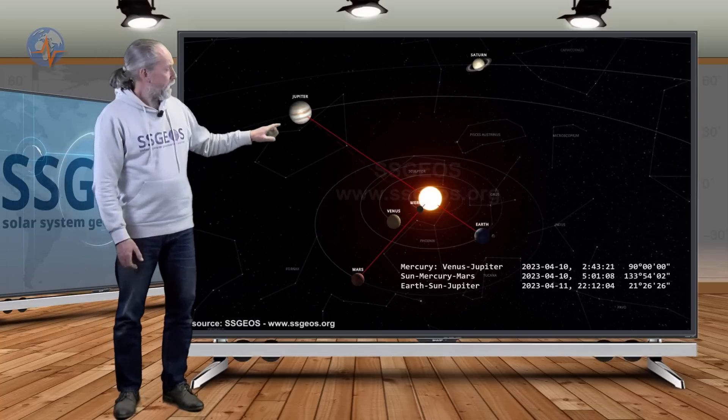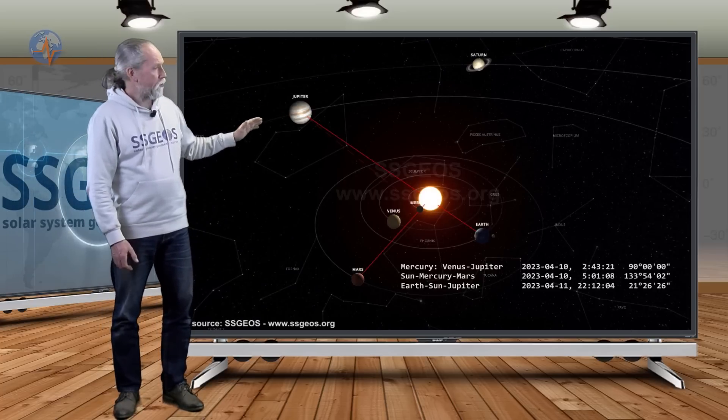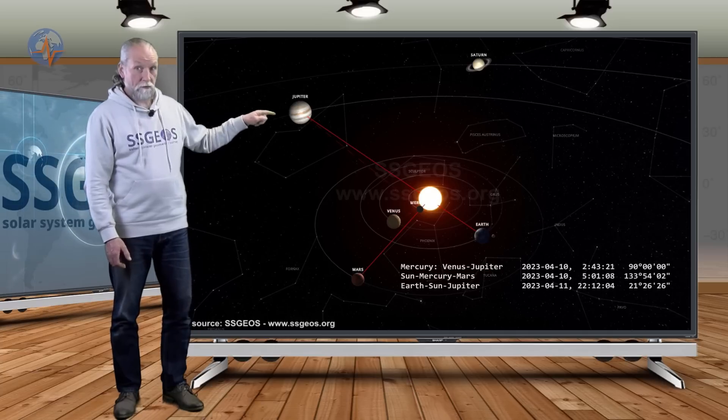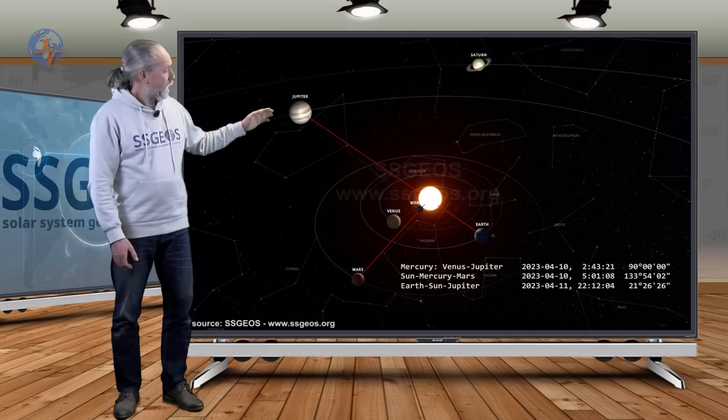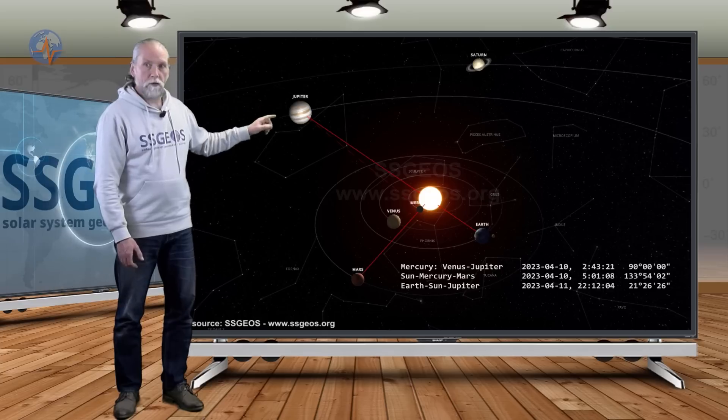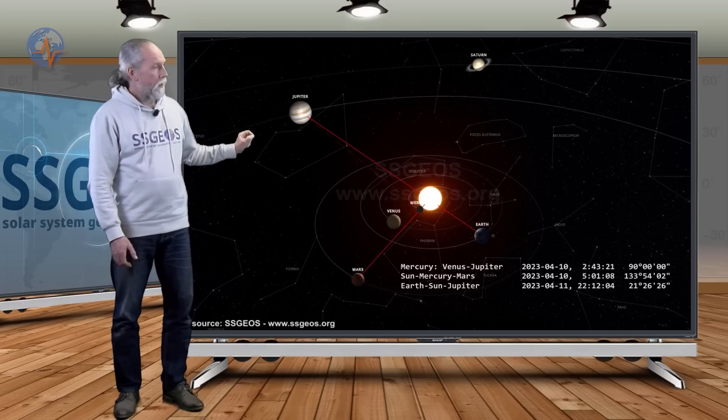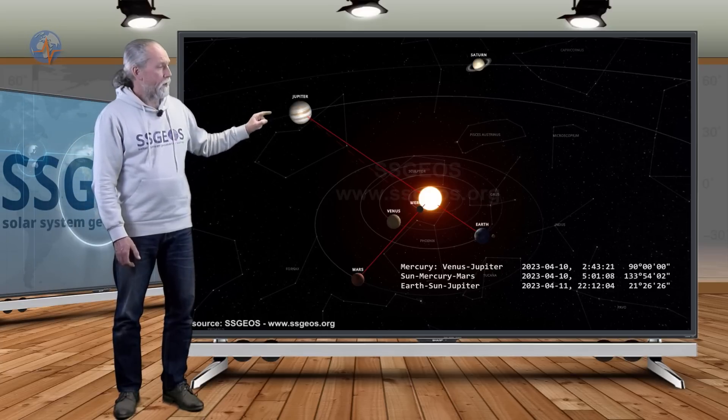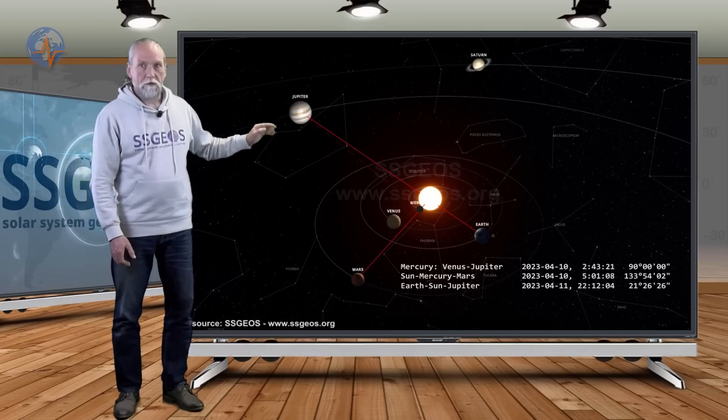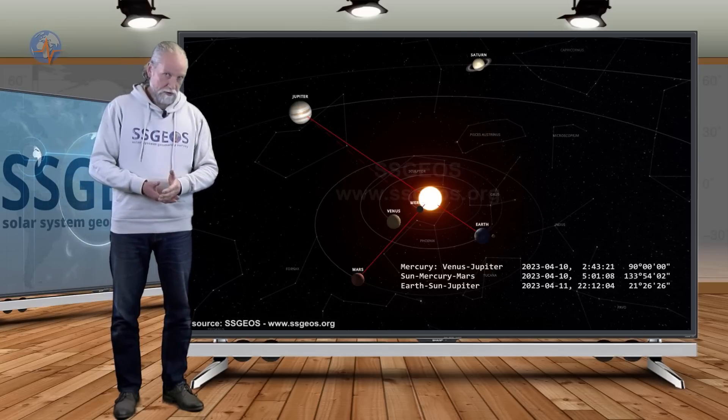If we look at the solar system, we can see two planetary conjunctions. The first will be in several hours early on the 10th: Sun, Mercury and Mars. It will be followed on the 11th by Earth in conjunction with the Sun and Jupiter.